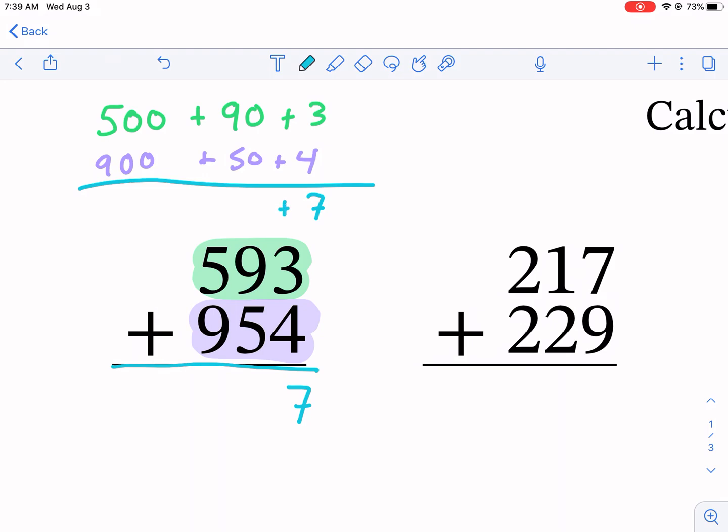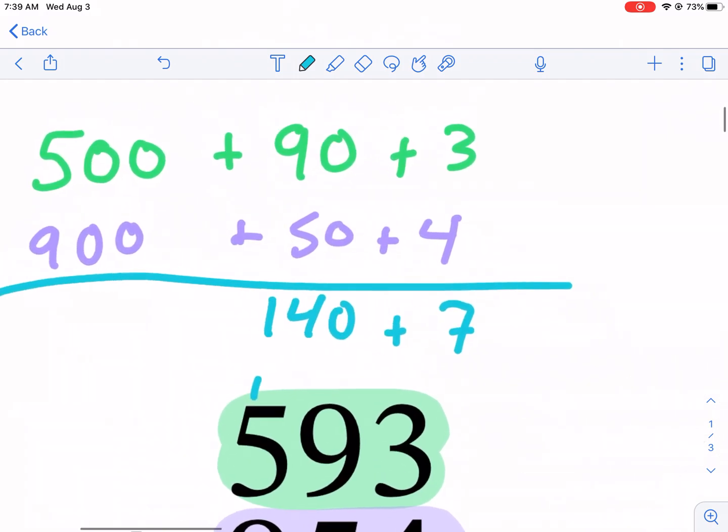Now we have 9 plus 5, but it's really 90 and 50 that we're adding. That equals 140. You don't just write 140 here because that would make this number 1,407, which isn't correct. Instead, we write the 4 and carry the 1.